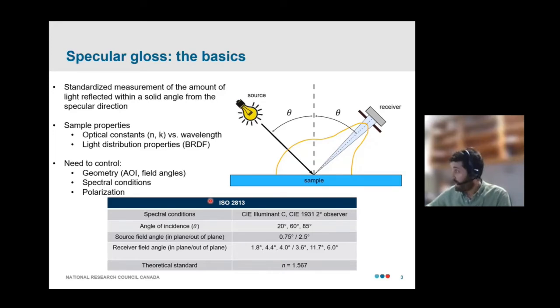And that's exactly what standards like ISO 2813 prescribe. So here I'm showing a table of the various spectral and geometric conditions that are expected for that standard. And of course, as we've heard, the standard is defined such that this theoretical or fictitious black glass of refractive index 1.567 defines 100 gloss units at each angle of incidence.